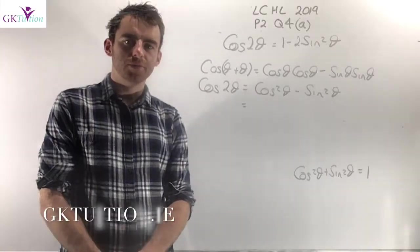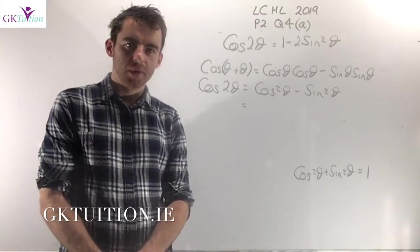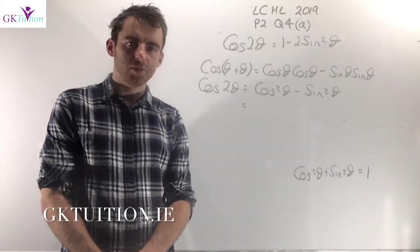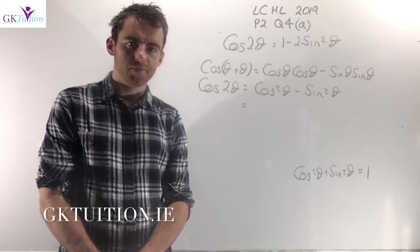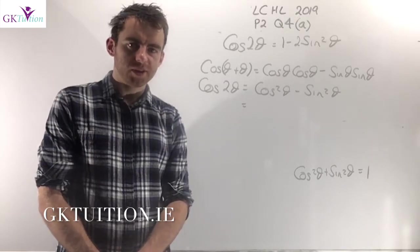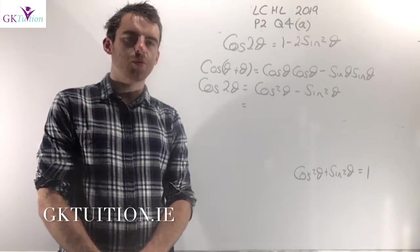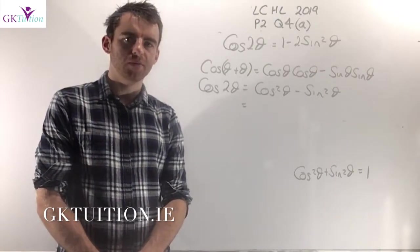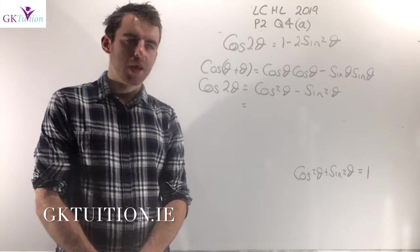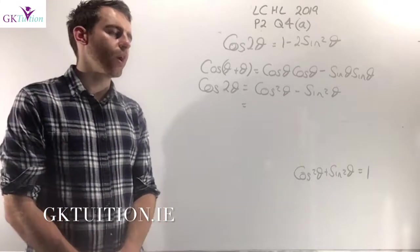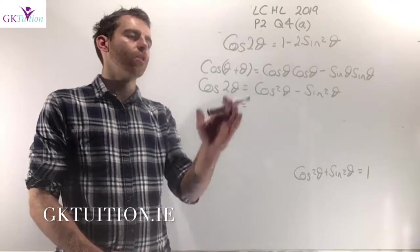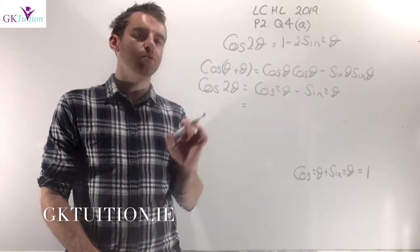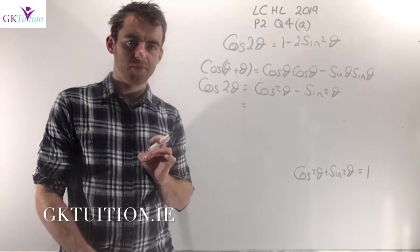Hi, I'm Paul Kjogan from GK Tuition and in this video I want to talk to you about trigonometry. The question I've chosen to go through here is 2019 paper 2 question 4. In this question we're asked to show that cos 2 theta is equal to 1 minus 2 sine squared theta.